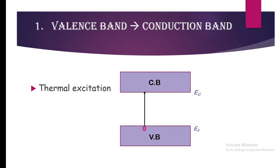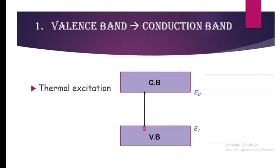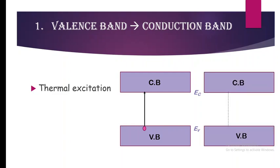After the transition the electron is present in the conduction band, and a hole is created in the valence band. This type of transition is called an interband transition because two types of bands — the valence band and the conduction band — are involved.